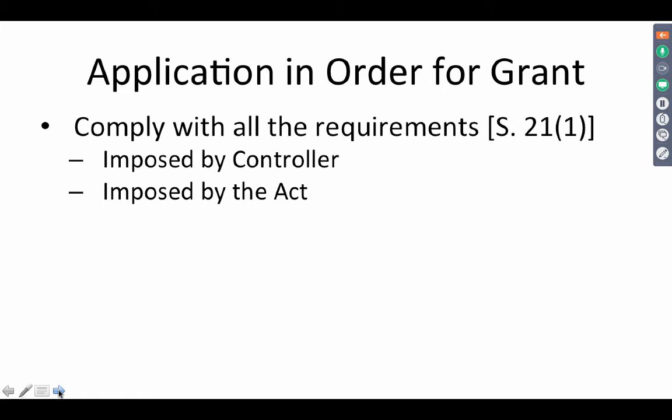These requirements are imposed by the controller in light of the powers vested in the controller under the act. The first statement of objections is a document that prepares the applicant to ready his application for a grant under section 43. Section 43 mandates two things broadly: it says that where an application for a patent has been found to be in order for grant, either the application has not been refused by the controller by virtue of powers vested upon him, and the application has not been found to be in contravention of any provision of the act.